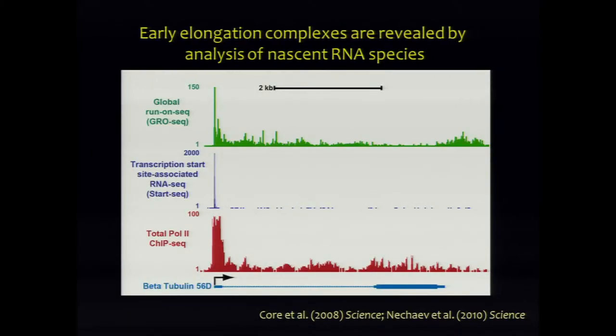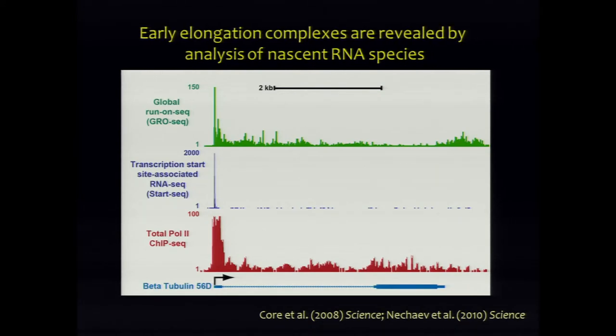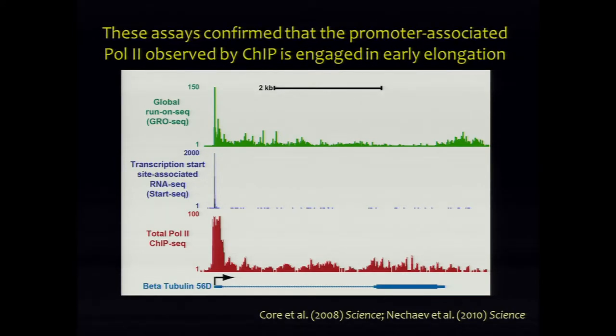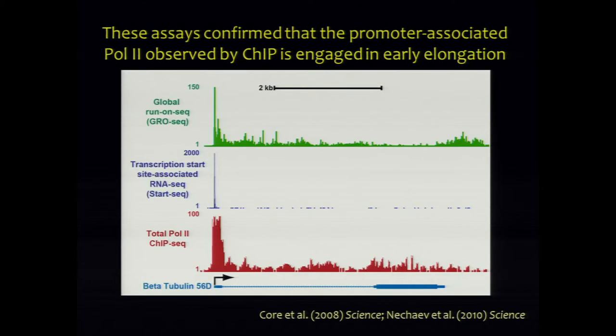Leighton developed Global Run-On Sequencing (GRO-seq), where you isolate nuclei, feed them a labeled nucleotide, and then purify RNA containing that labeled nucleotide to identify with beautiful signal-to-noise exactly where transcription complexes competent to elongate were sitting in the genome. This gives a much nicer estimation of the actual transcription rate in a cell at a specific time than you get from RNA-seq, Pol II ChIP-seq, or anything similar. We found nascent RNAs almost everywhere we could find Pol II.